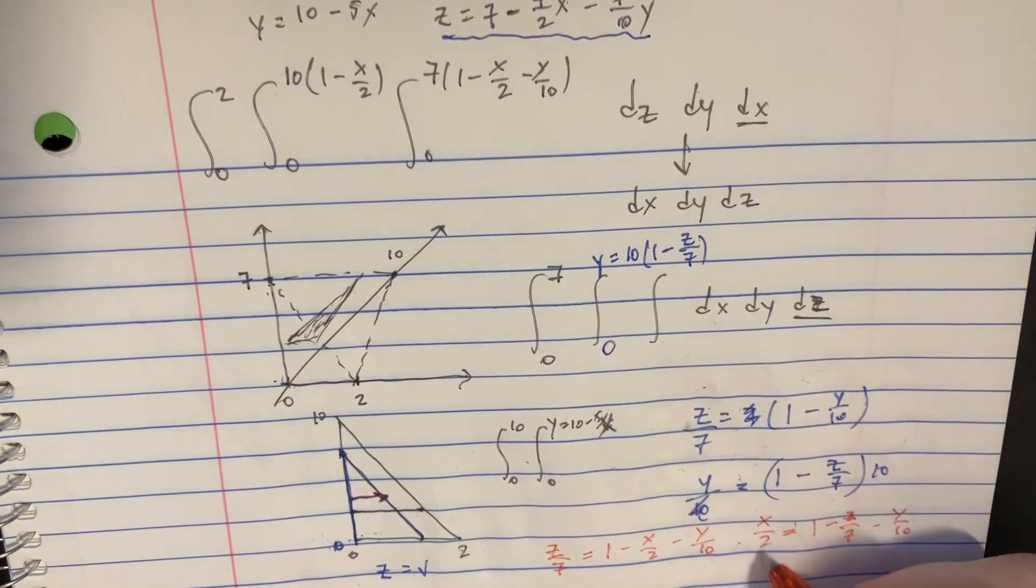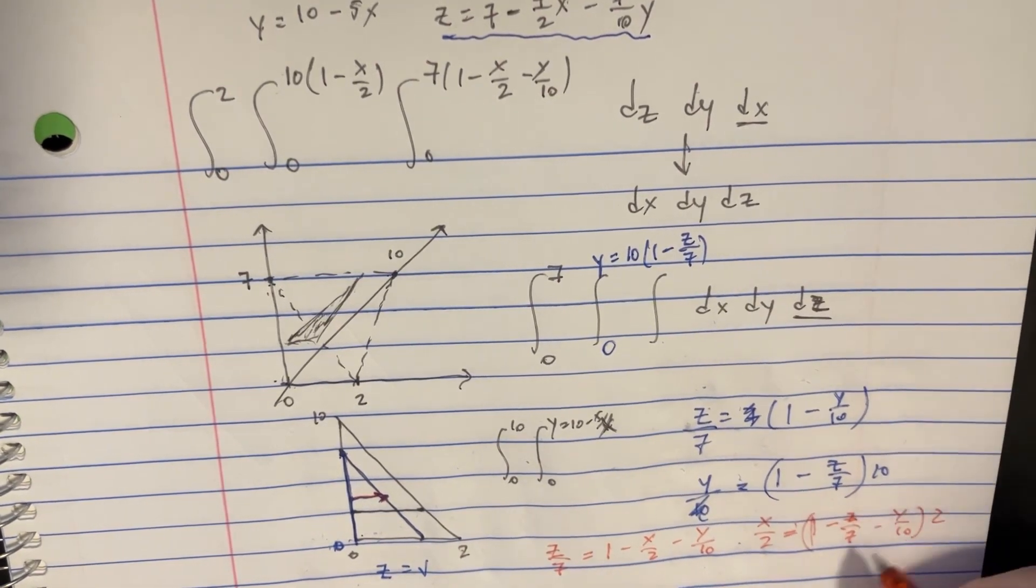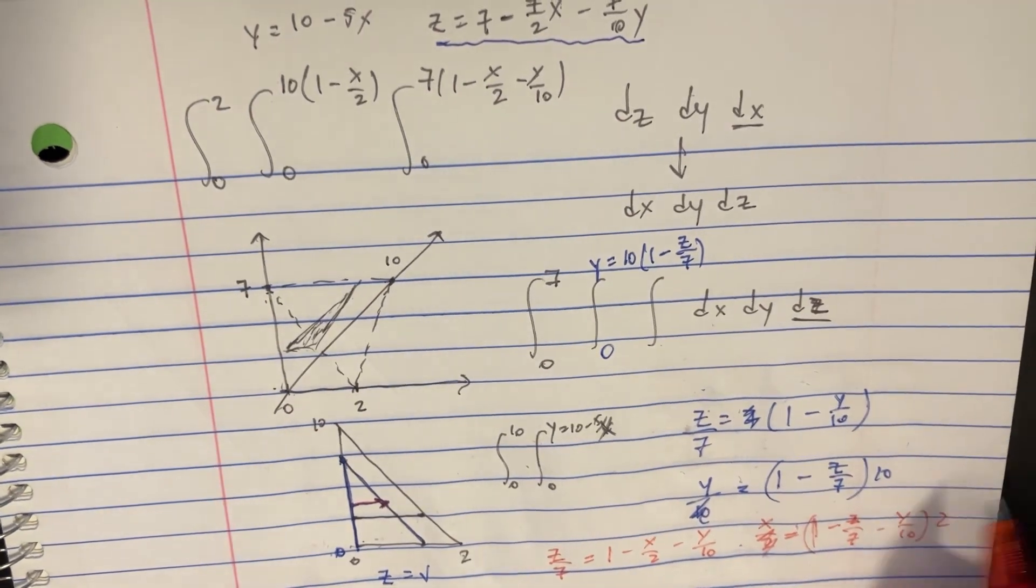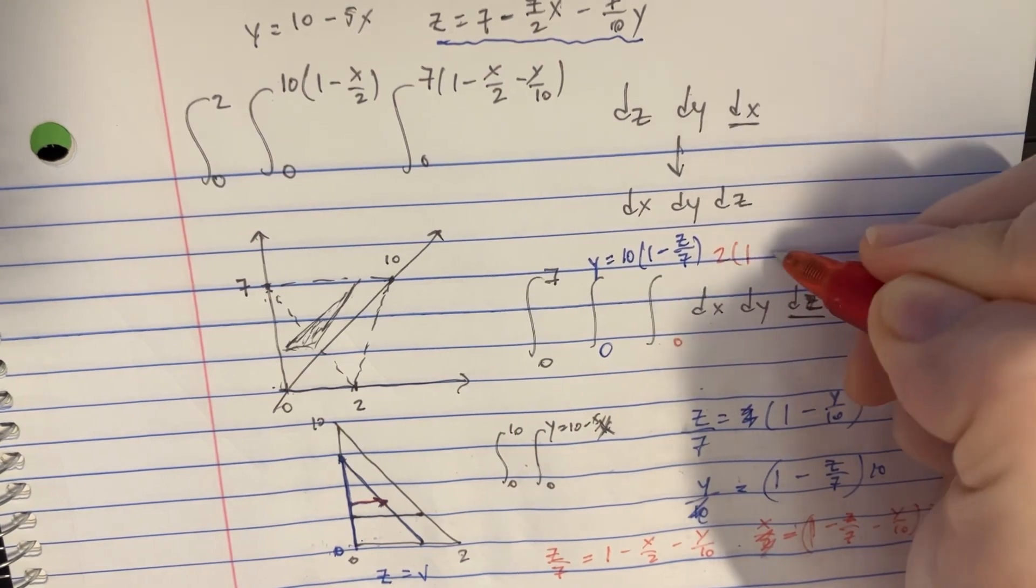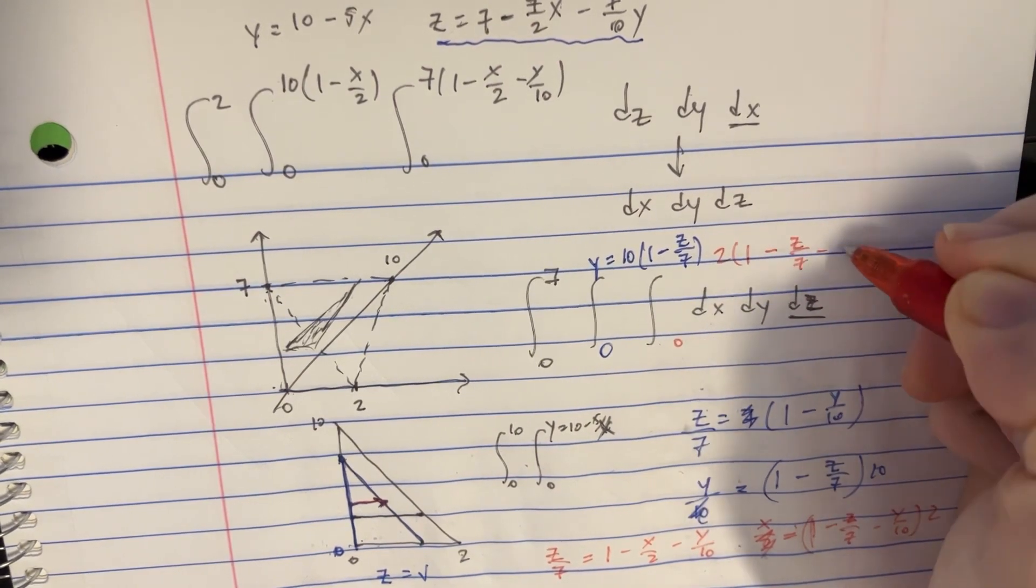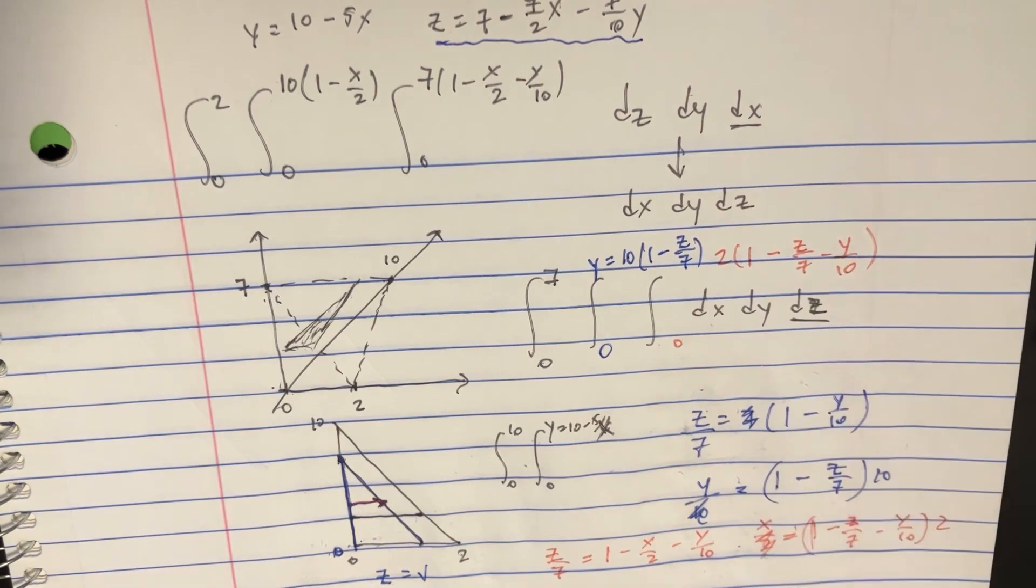And then we can swap those two. So we'll get x over 2 equals 1 minus z over 7 minus y over 10. And then we can multiply this thing by 2. And we'll get our x's. So we're going to go from 0. And then here it's 2 times 1 minus z over 7 minus y over 10. And there we go.